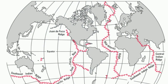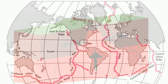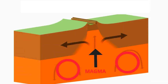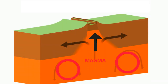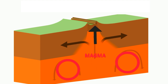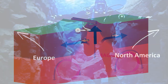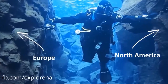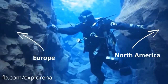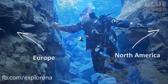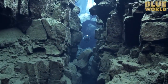Divergent boundaries occur when two tectonic plates are moving away from each other. Imagine two massive puzzle pieces pulling apart. When this happens, magma from the mantle below rises up to fill the gap. Most divergent boundaries are found under the ocean, creating features like the Mid-Atlantic Ridge.